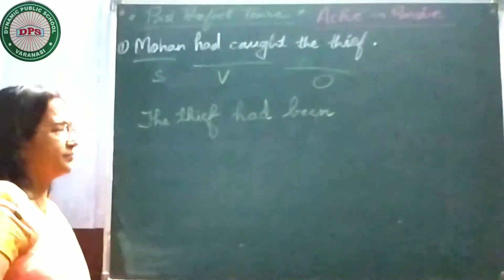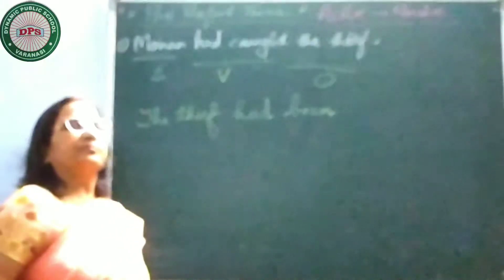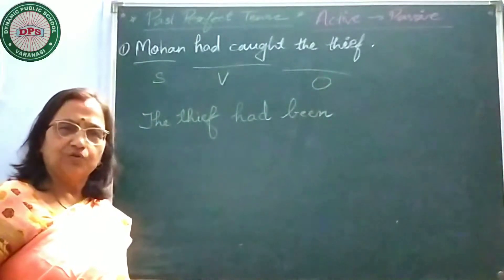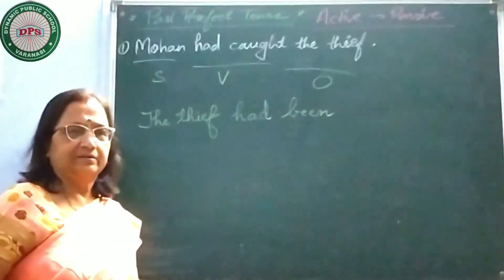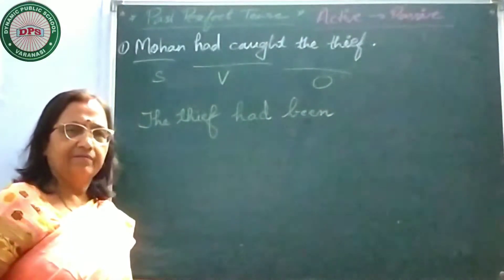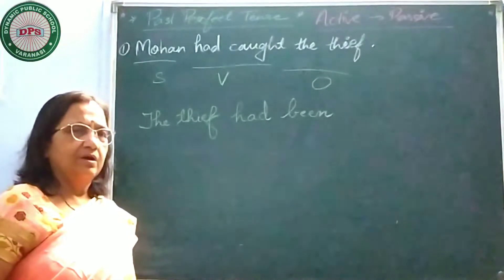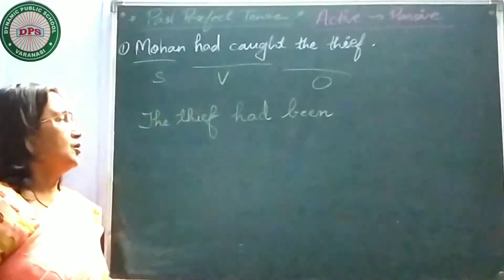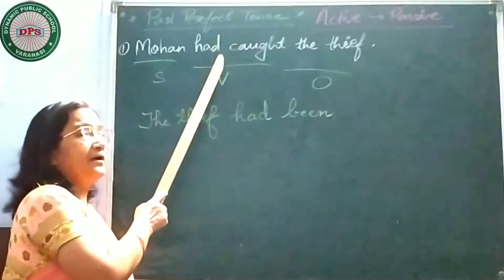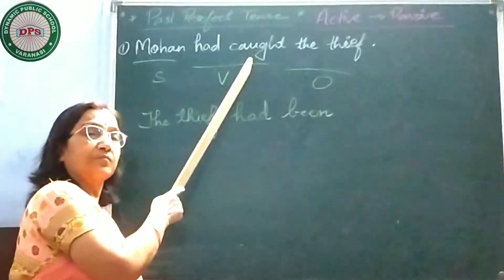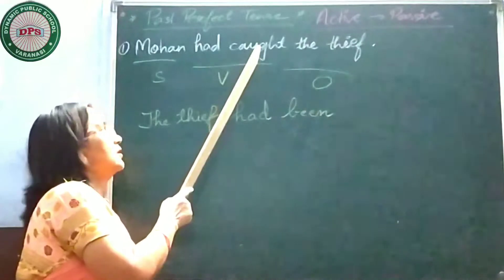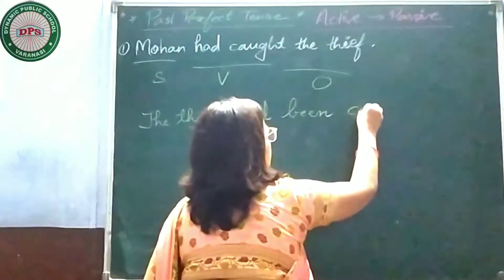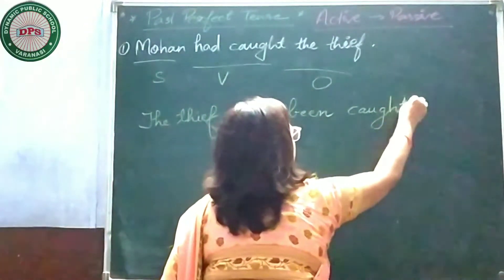What is the third form of 'catch'? Catch–caught–caught. 'Caught' is already the third form. As you know, with 'has,' 'have,' and 'had' we always use the third form of the verb. Here we have 'had,' so it is the third form — catch, caught, caught. Now write down 'caught.' The thief had been caught by...